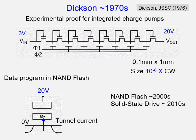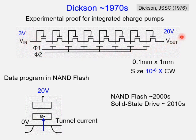Then, about 40 years later, Dickson showed a new type of charge pump to integrate that circuit to program non-volatile memory, such as NAND flash memory. From a 3V input, the charge pump can generate 20V, which is applied to the gate of the flash memory cell to program the data. With the 20V at the gate, the tunneling phenomenon occurs between the floating gate and the silicon substrate. The size is as small as 10 to the minus 8 of Cockroft and Walton.